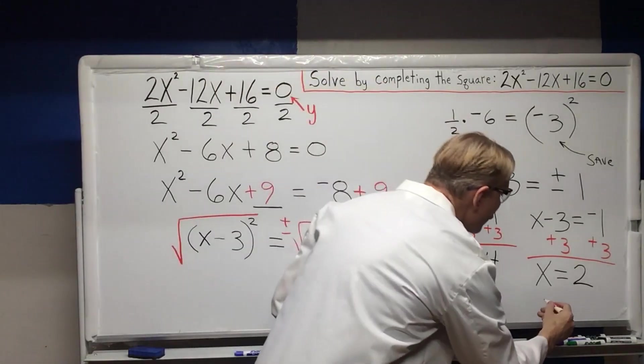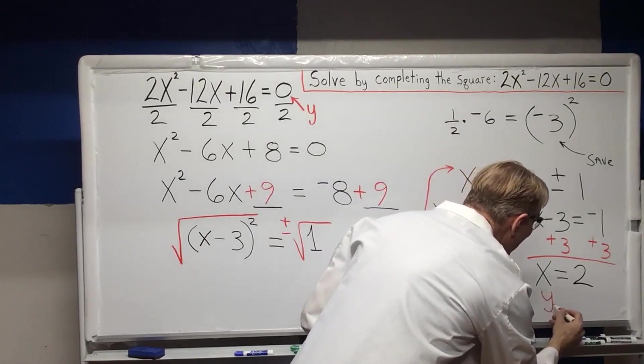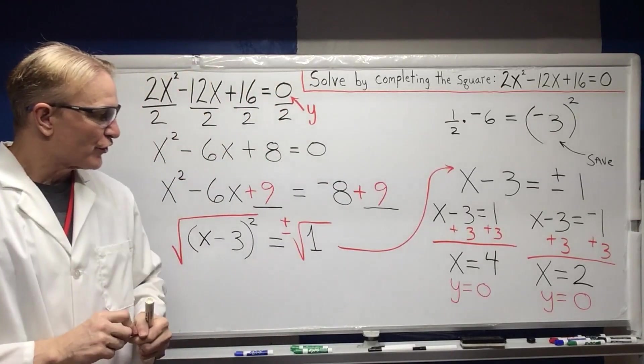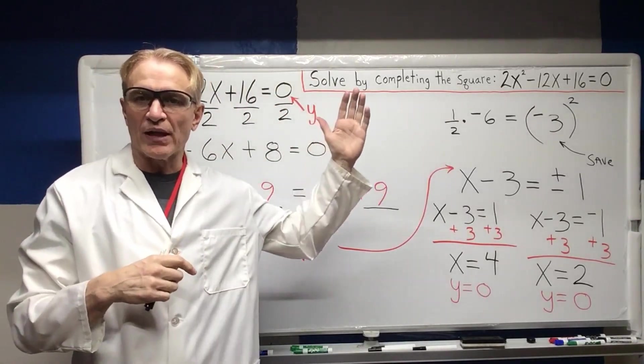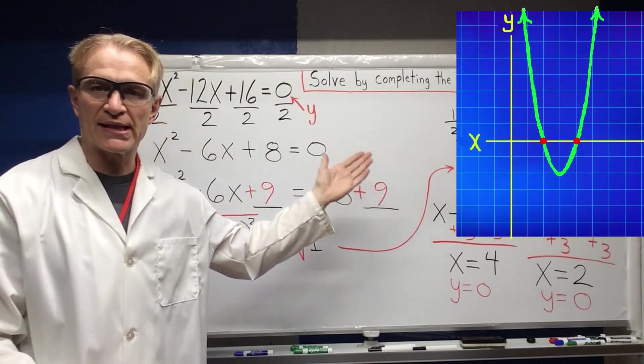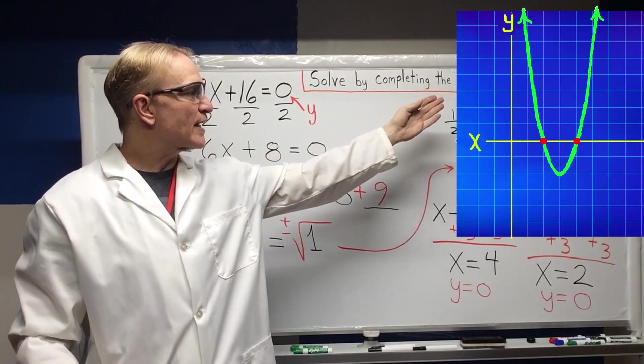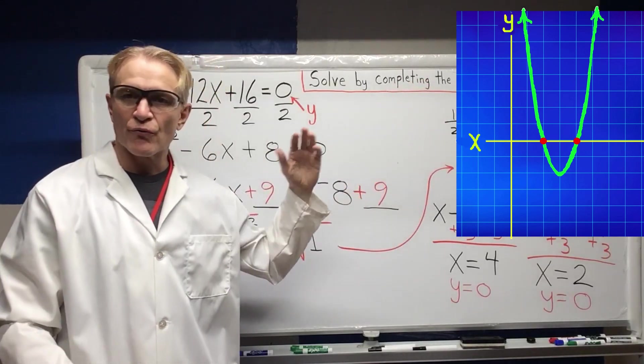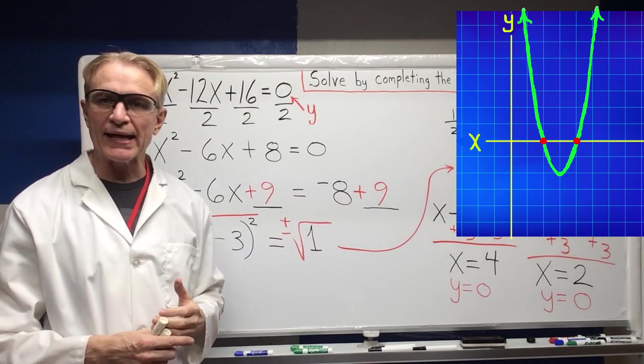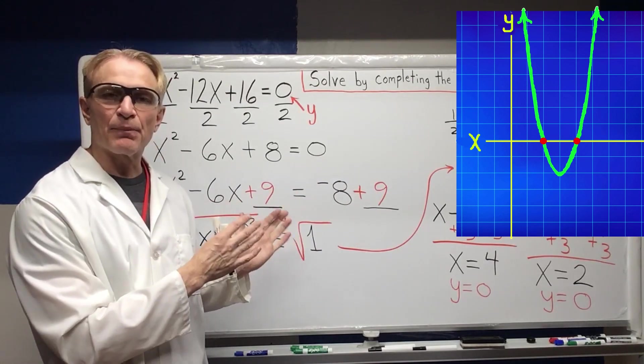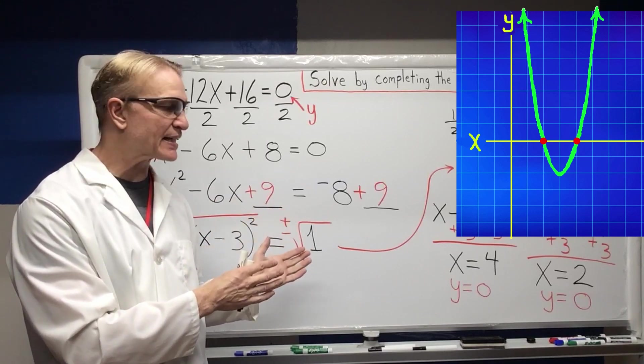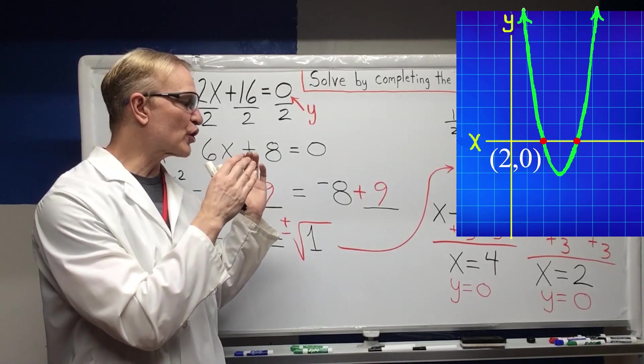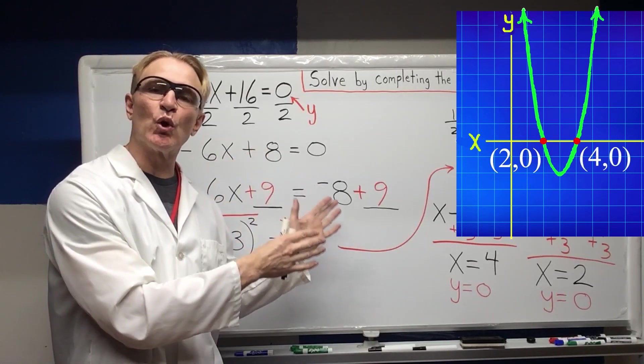So now looking at our parabola up here, you can see the parabola of 2X squared minus 12X plus 16 equals zero right here. And as indicated, you can see that the parabola is crossing the X axis at X equals 2 and also at X equals 4.